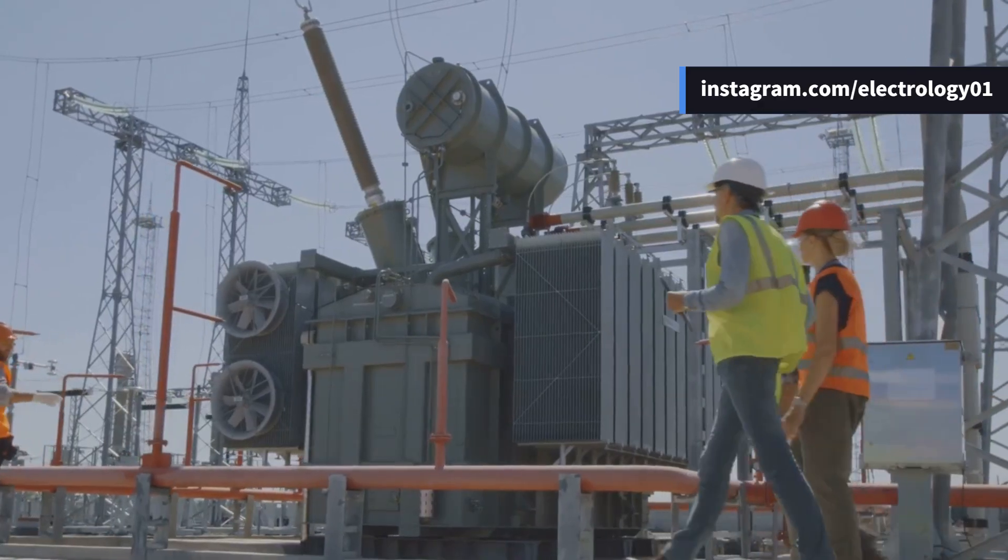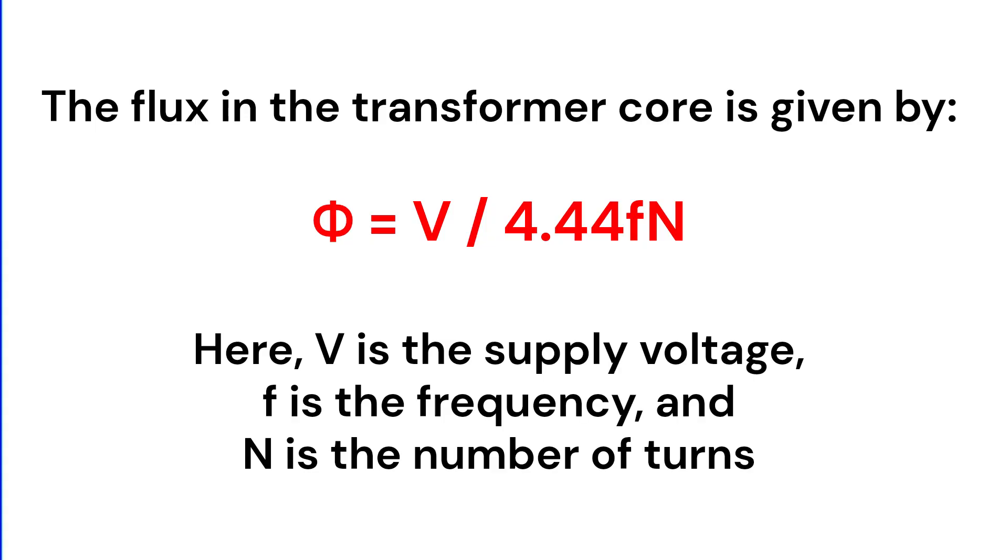Now, let's break it down mathematically. The flux in the transformer core is given by the formula phi equals V by 4.44FN. Here, V is the supply voltage, F is the frequency, and N is the number of turns. Assuming the number of turns is constant, the flux is directly proportional to the V/F ratio. This means if the voltage increases or the frequency decreases, the flux in the core will rise.